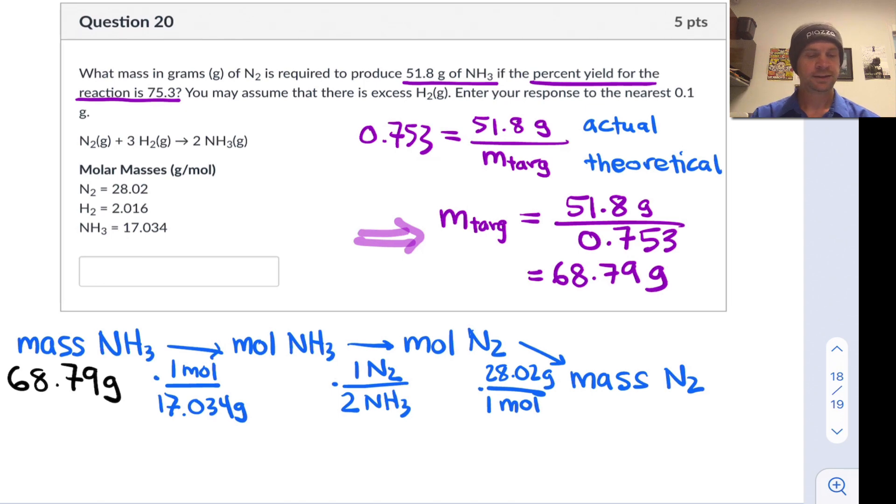And when you chug through the numbers, calculate all this out, you arrive at a mass of 56.6 grams of N2 required to produce that 68.79 grams of NH3 theoretically.